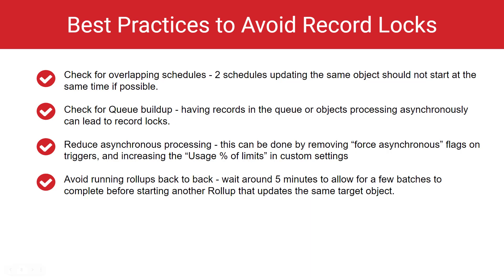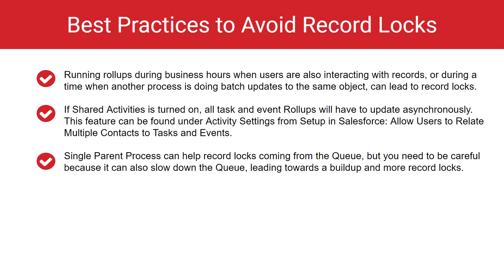Avoid running roll-ups back-to-back. Wait around five minutes to allow for a few batches to complete before starting another roll-up that updates the same target object. Running roll-ups during business hours when users are also interacting with records, or during a time when another process is doing batch updates to the same object, can lead to record locks.